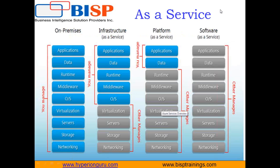As you can see here, this is what Infrastructure as a Service looks like. If everything is on your premises, you have to manage everything: networking, storage, operating system, runtime, data, and applications. With Infrastructure as a Service, you manage only the application, data, runtime, and OS — other things are managed by the third-party vendor. With Platform as a Service, you manage only the application and data. With Software as a Service, you manage nothing — everything is managed by the third-party vendor.